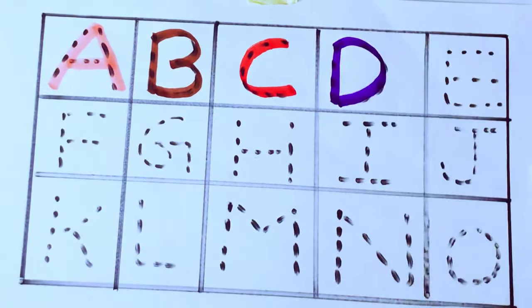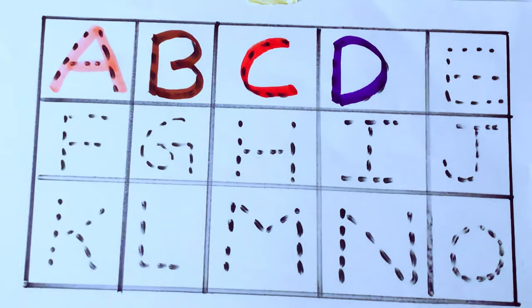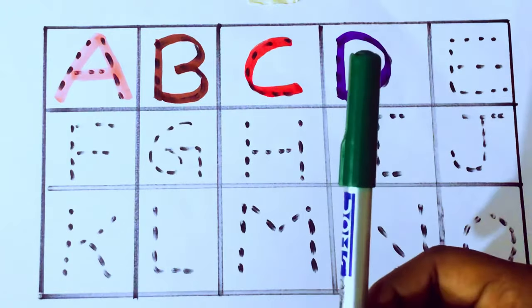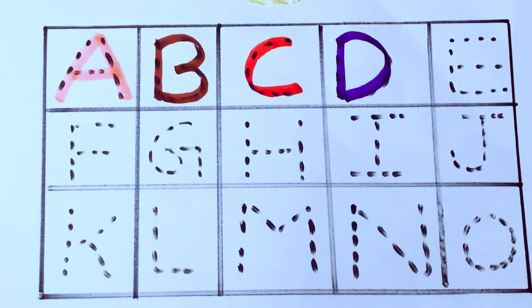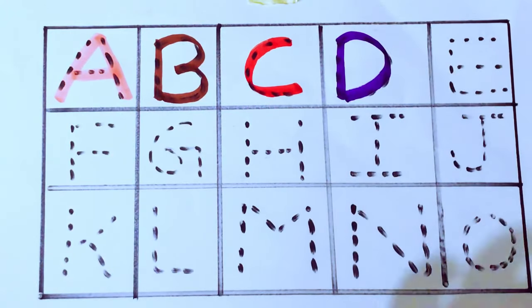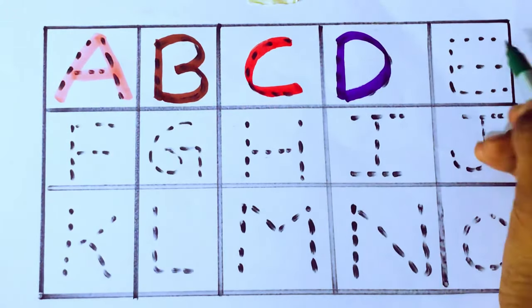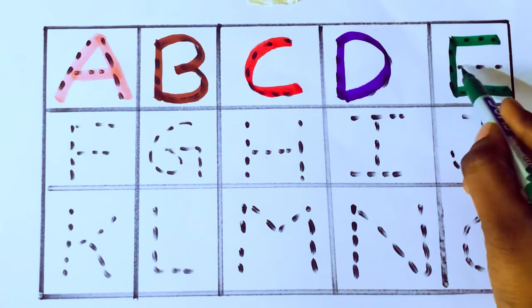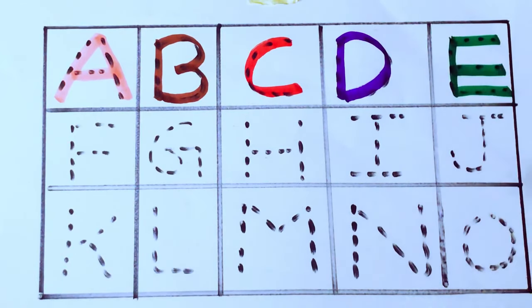Dog. Green color. D after E. Which letter? E. E for egg. E for egg.